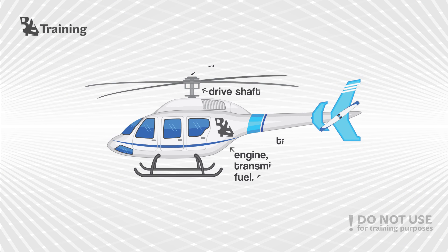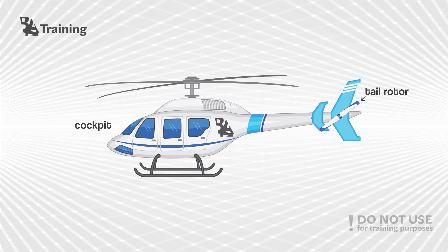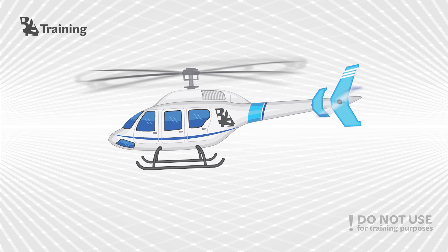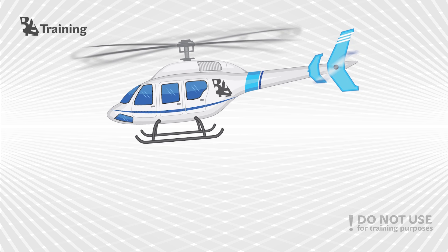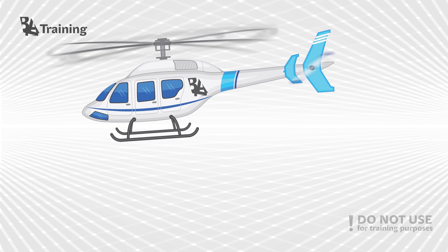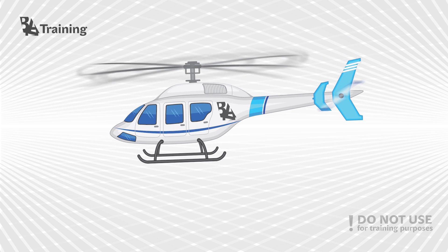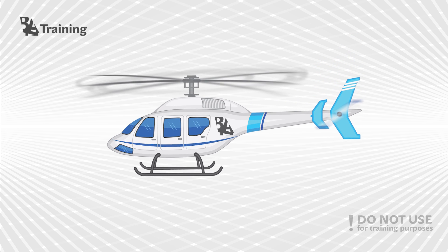A helicopter is a type of rotorcraft in which lift and thrust are supplied by rotors. This allows the helicopter to take off and land vertically, to hover, to fly forward, backward and laterally. These attributes allow helicopters to be used in congested or isolated areas where fixed-wing aircraft and many forms of vertical takeoff and landing aircraft cannot perform.